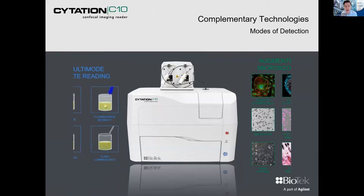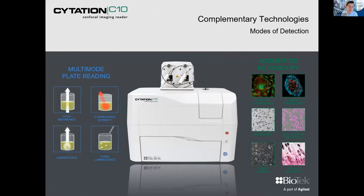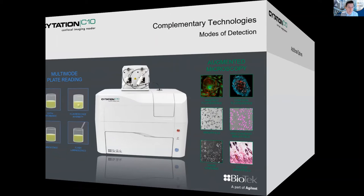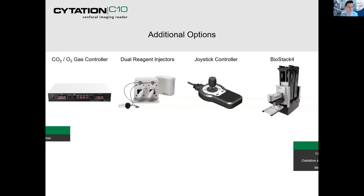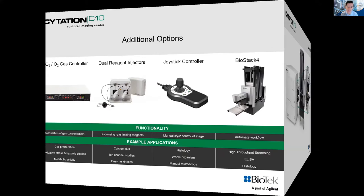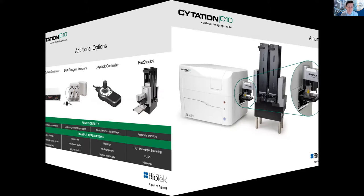Additional options that can be included with the Citation CX10: CO2 and O2 gas controller, dual injectors, joystick, and BioStack — modulating gas concentration, dispensing drugs, moving through the stage with the joystick, and enabling an automated workflow with the BioStack. The BioStack robot houses plates and operates the automated plate workflow.